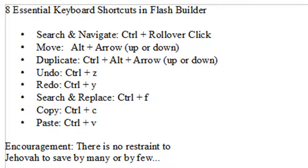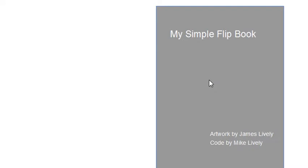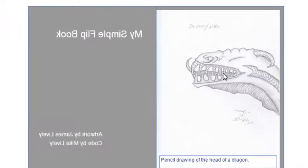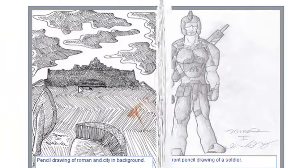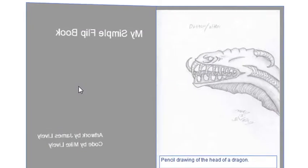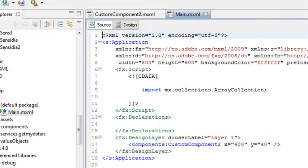Now we're going to go into some code that we've been building and show you how each one of these works. We've been building this simple flipbook on YouTube — you click and things flip over, and you can go from page to page. That code has a lot in it, and we're going to show you how to use these shortcut keys right now.